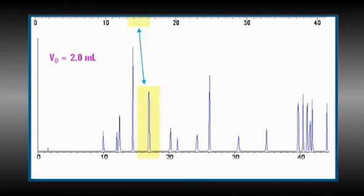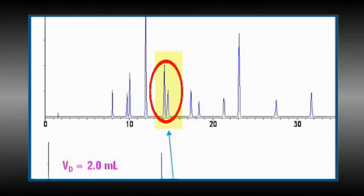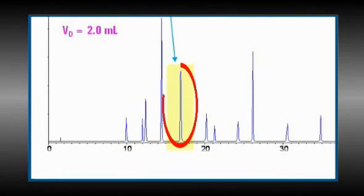The lower trace is a simulated chromatogram of that same separation carried out on an instrument having a dwell volume of 2 milliliters instead of 0.43 milliliters. You can see that a peak pair that separated on one instrument completely co-eluted on the instrument with the larger dwell volume. Dwell volume differences can change both peak widths and relative retention in gradient separations. It is wise to test the effect of different dwell volumes when developing a gradient method.